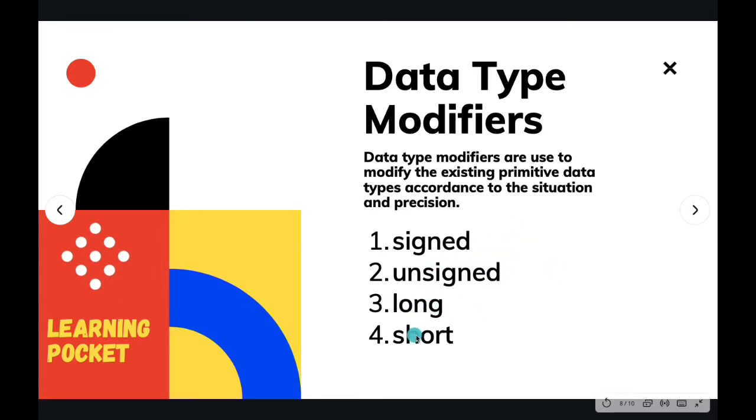Before the name of the actual data types, you can write, for example, signed int, unsigned int, long int, short int. So what are these four? These four have a different impact on every data type.